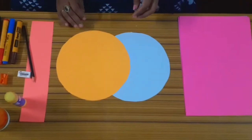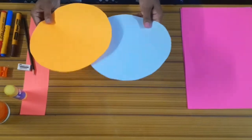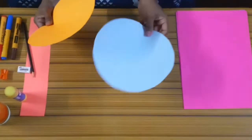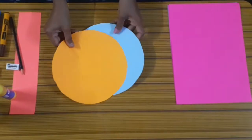The first activity is sight word spinner. For the sight word spinner we need two circles. One circle you cut in chart or cardboard, and another circle use a color paper and cut it.